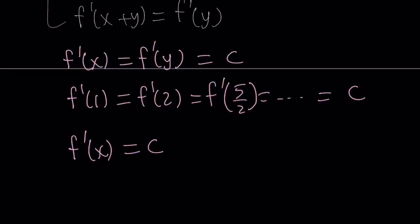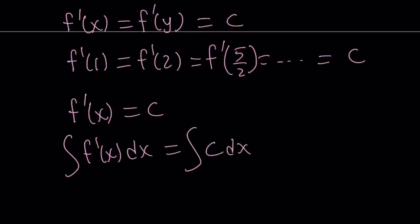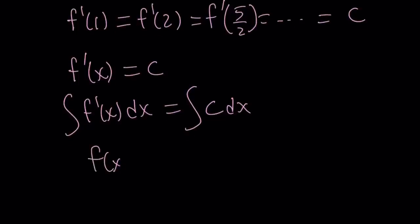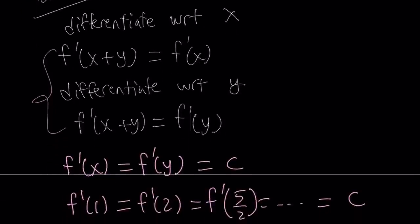So f'(x) = c, a constant. What kind of functions give a constant derivative? We can integrate both sides: the integral of f'(x) dx equals the integral of c dx. The left hand side is f(x), and the right hand side is cx plus another constant d. So f(x) = cx + d — a linear function. If f is differentiable and satisfies this equation, f must be linear.